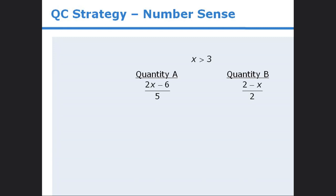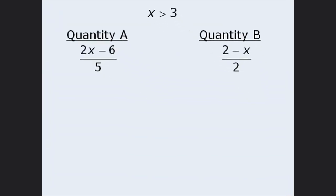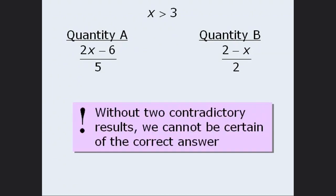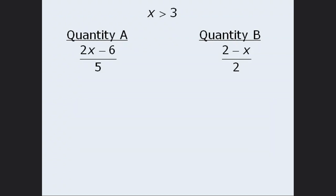To set things up, please consider the following question. You may wish to pause the video now and try answering it before continuing. One option here is to plug in values for X. But as we discussed in a previous lesson, this approach has some limitations — the biggest drawback is that without two contradictory results, you cannot be certain of the correct answer. Another option here is to perform matching operations on both quantities with the goal of simplifying them so that they're easier to compare. Let's try that.